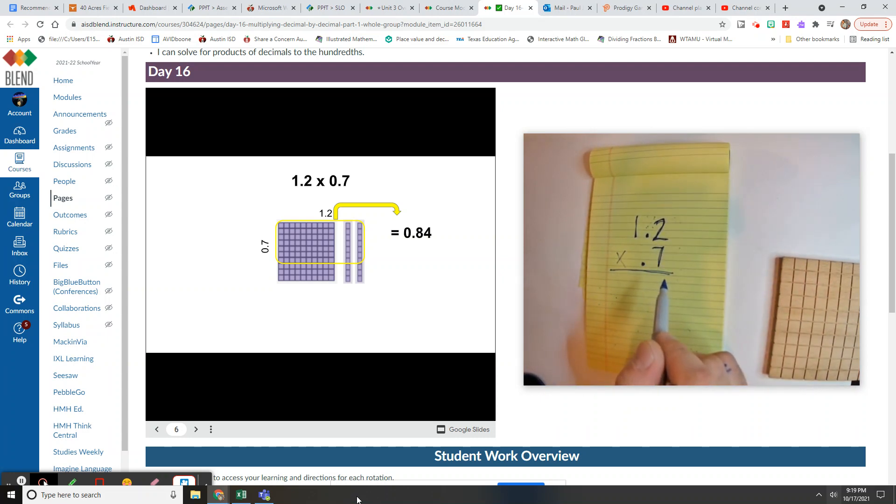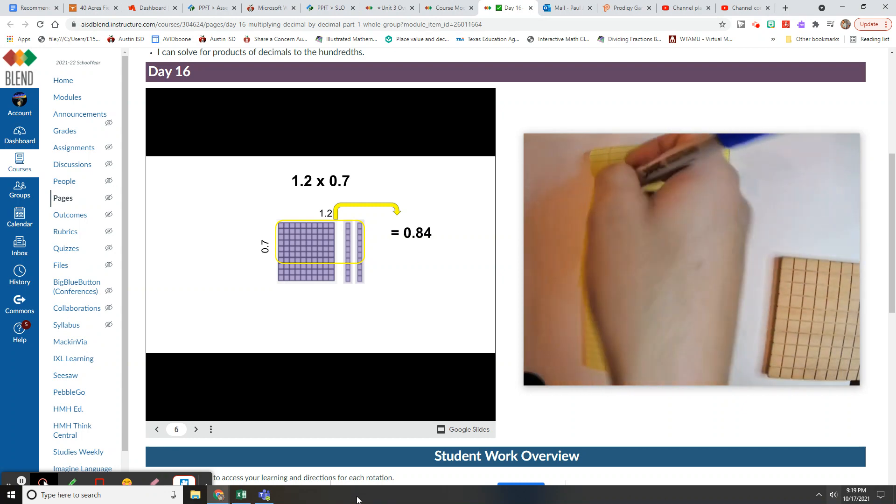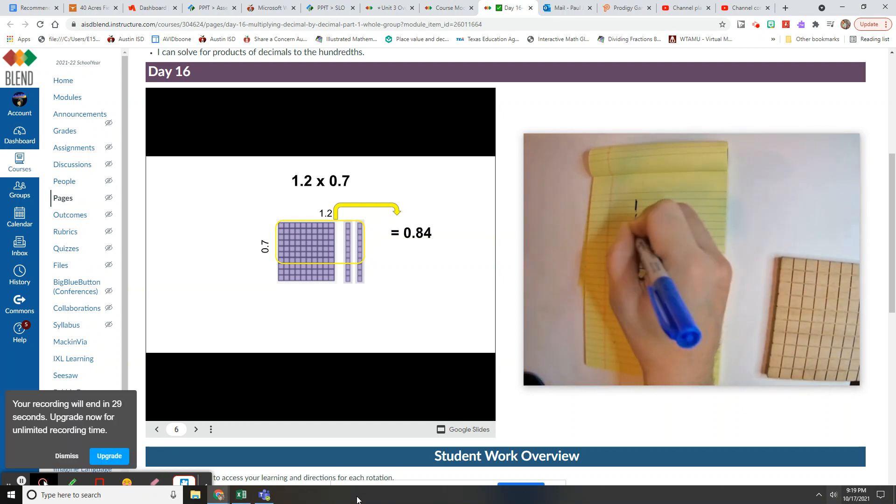You didn't do that on purpose, it just happened, and that's okay. So, seven times two is 14, so the four goes down, carry the one. Seven times one is seven, plus one is eight.